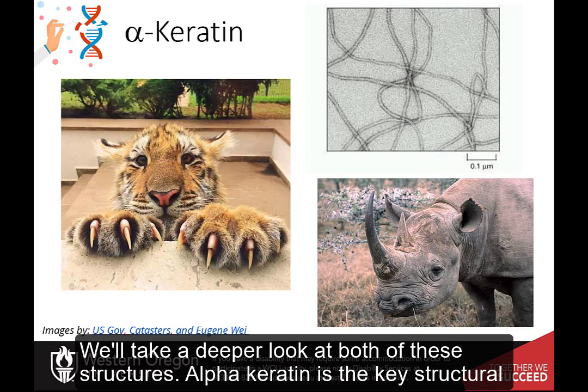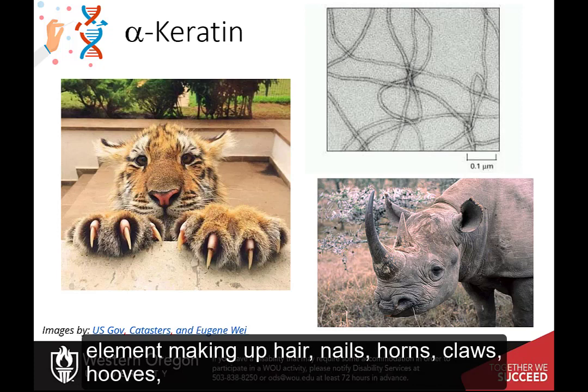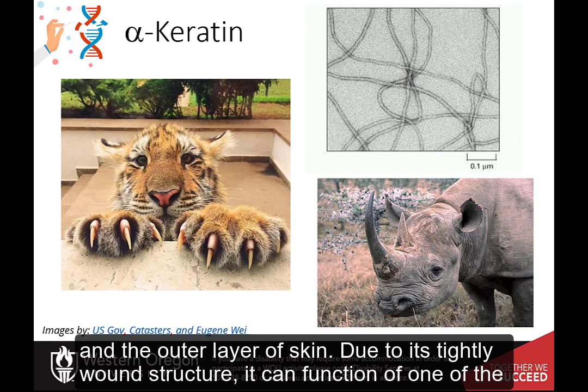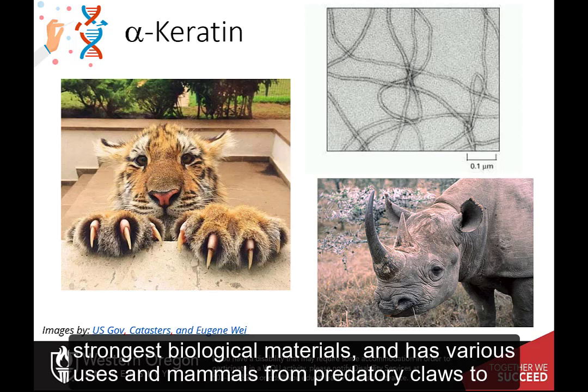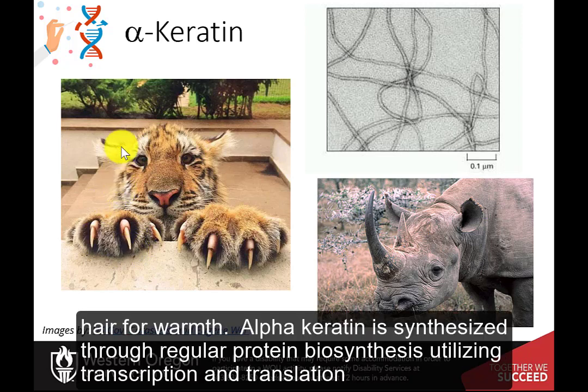Alpha-keratin is the key structural element making up hair, nails, horns, claws, hooves, and the outer layer of skin. Due to its tightly wound structure, it can function as one of the strongest biological materials and has various uses in mammals, from predatory claws to hair for warmth.